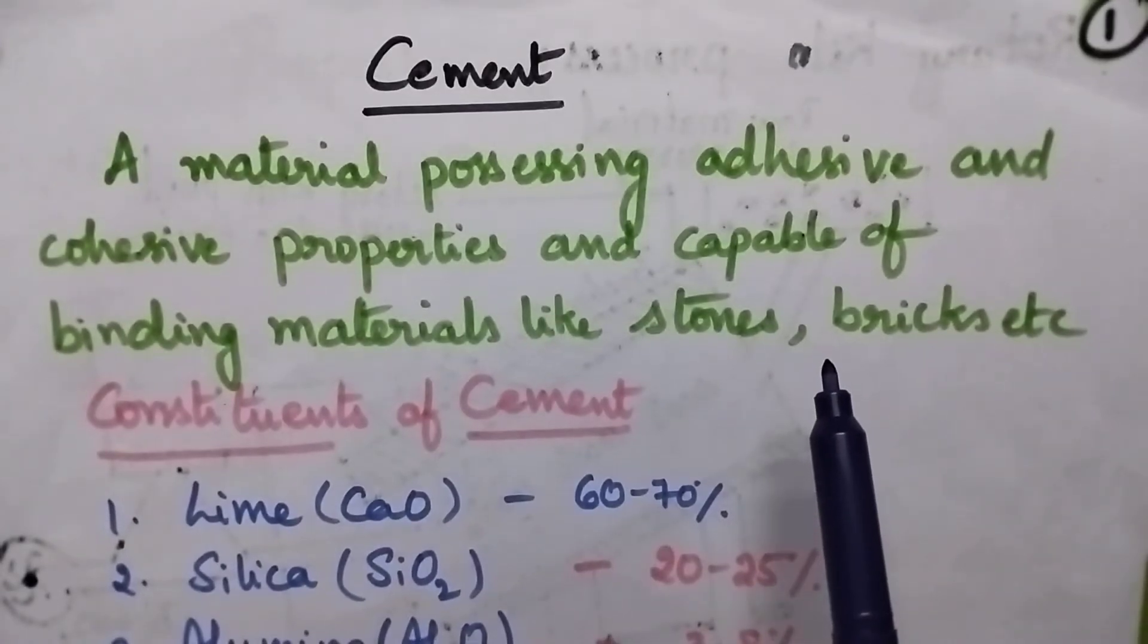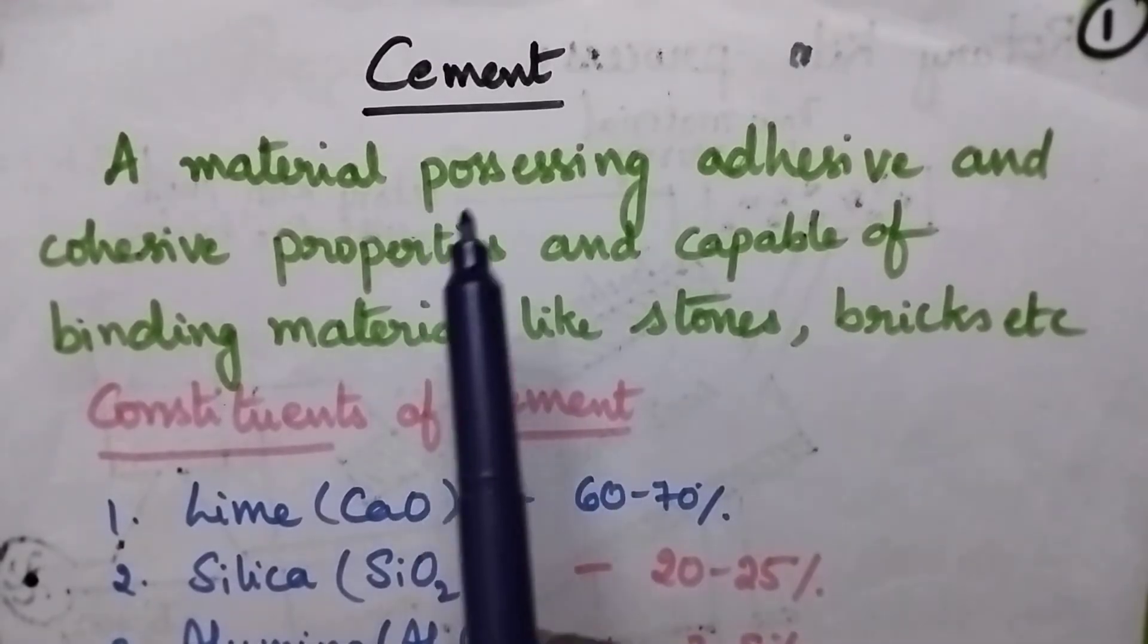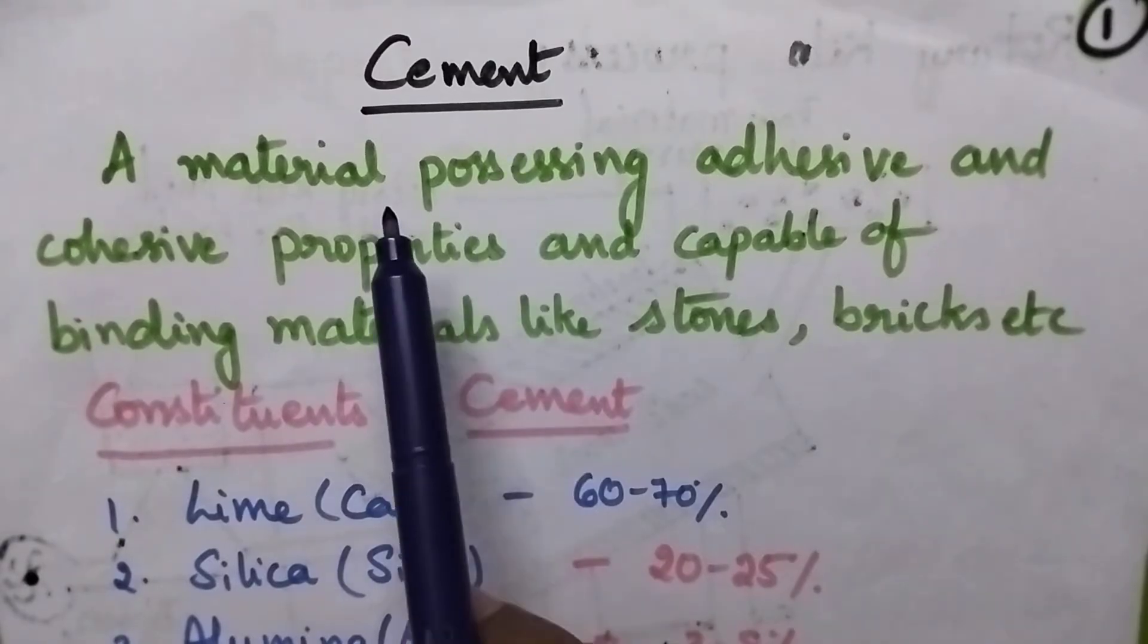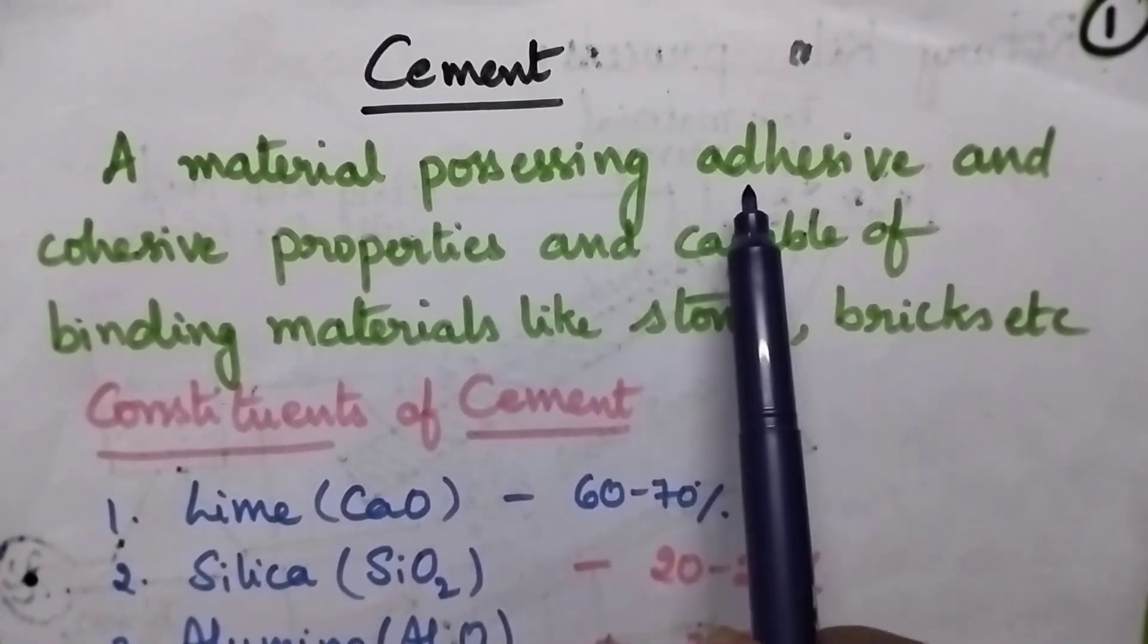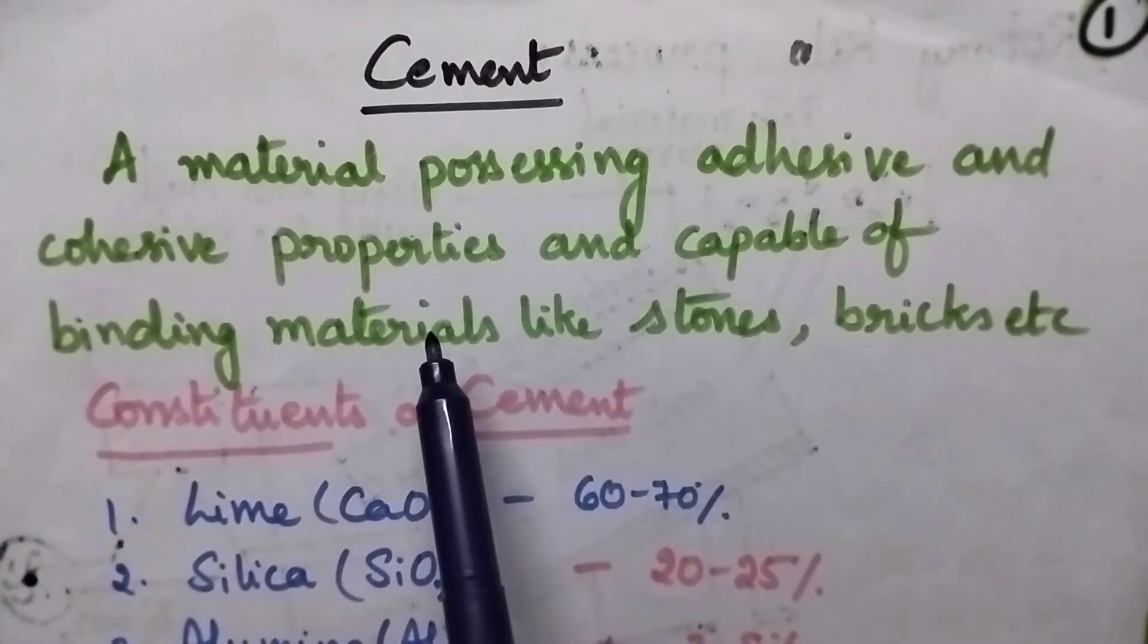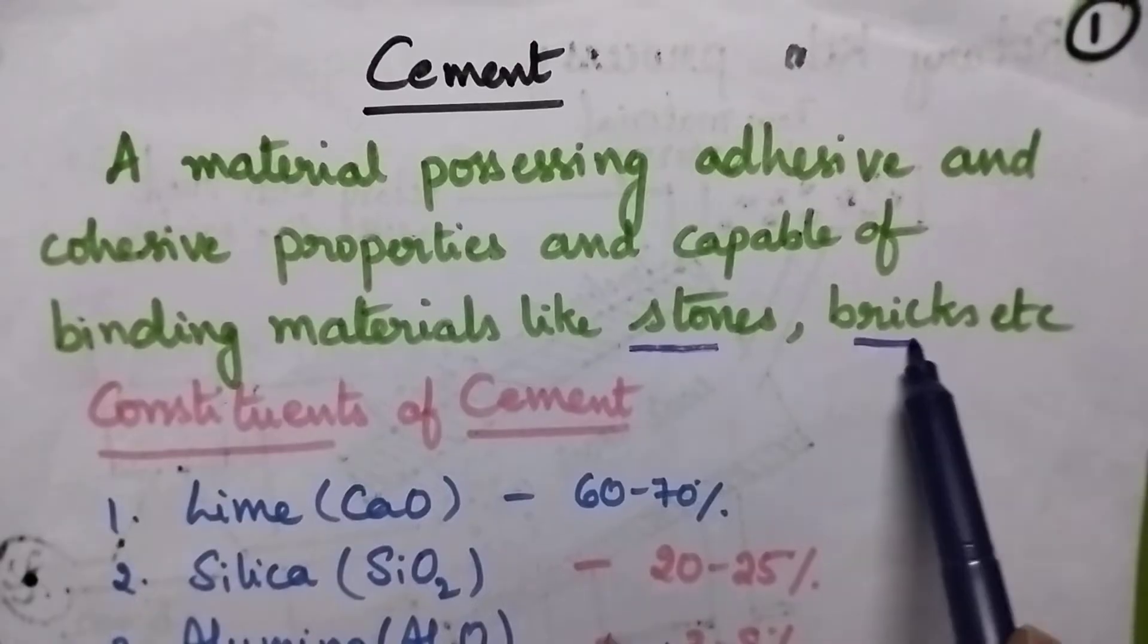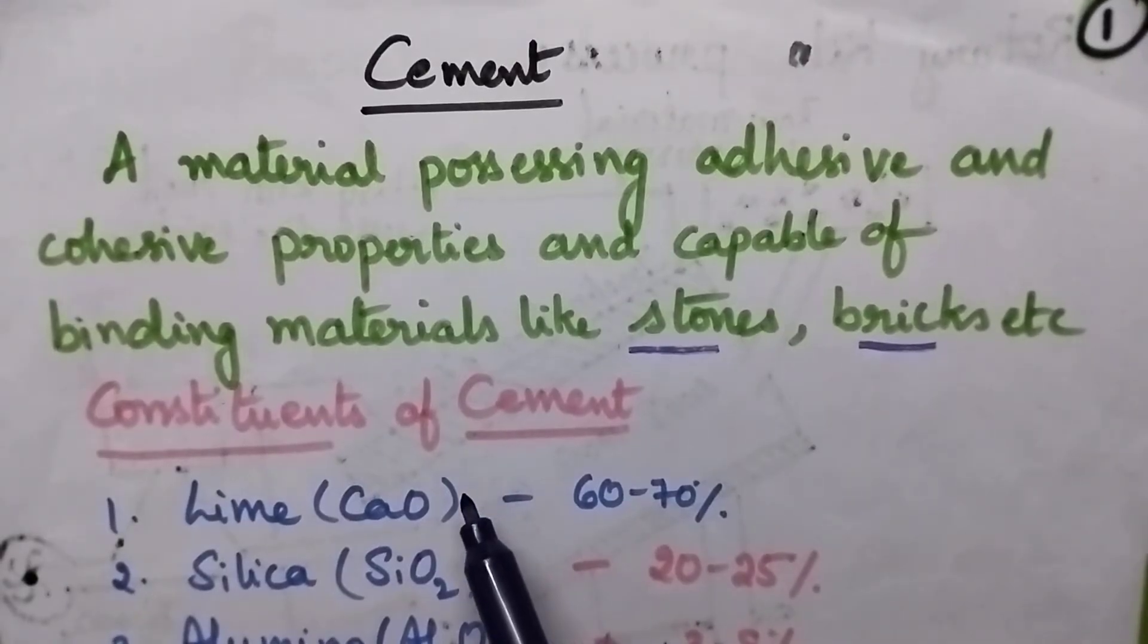Hello students, welcome back to my channel. In this video, I am going to discuss in brief about cement and manufacturing of Portland cement by Rotary Kiln Process. Cement is any material possessing adhesive and cohesive properties and capable of binding materials like stones and bricks.